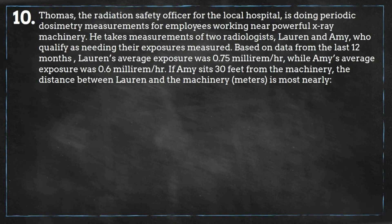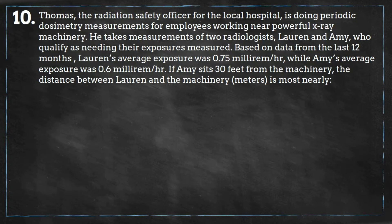Thomas, the radiation safety officer for the local hospital, is doing periodic dosimetry measurements for employees working near powerful x-ray machinery in the facility. He takes measurements of two radiologists, Lauren and Amy, who qualify as needing their exposures monitored periodically. Based on data from the last 12 months, Lauren's average exposure was 0.75 millirem per hour while Amy's average exposure was 0.6 millirem per hour.